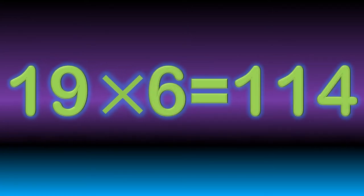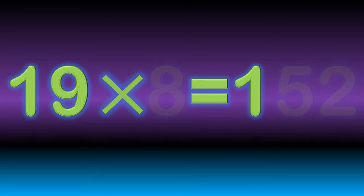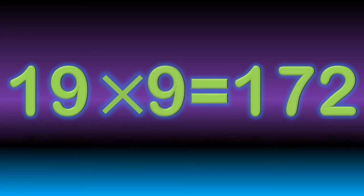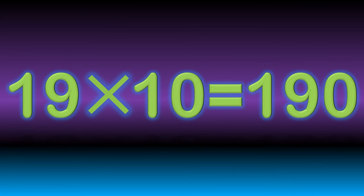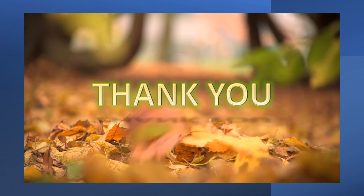19 sixes are 114. 19 sevens are 133. 19 eights are 152. 19 nines are 171. 19 tens are 190.